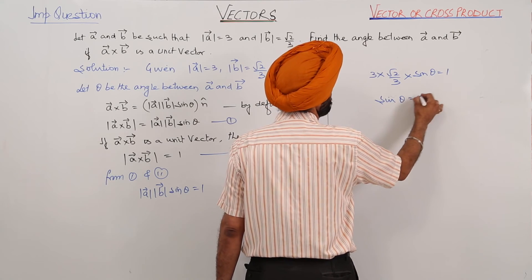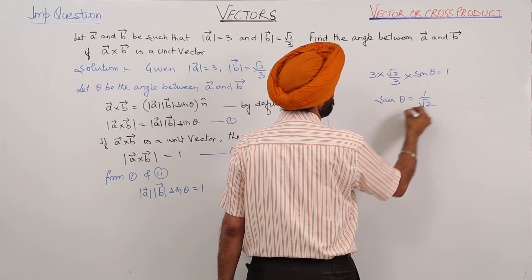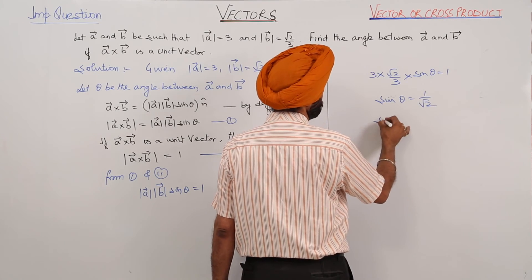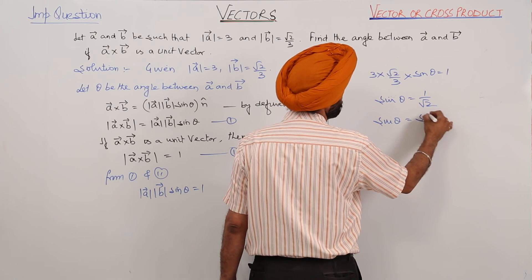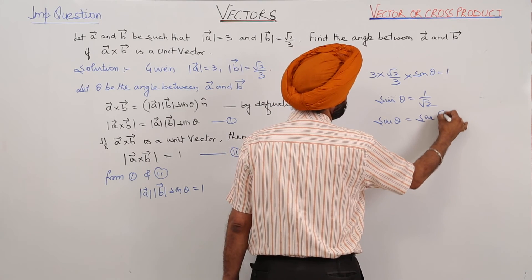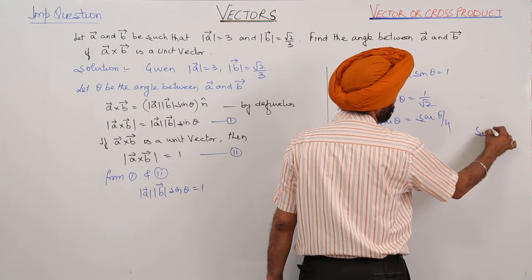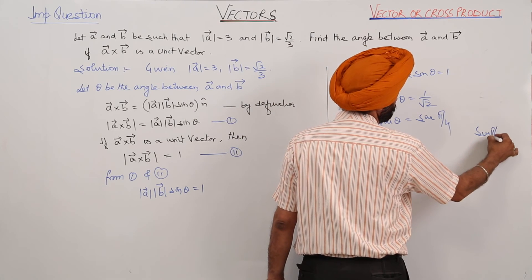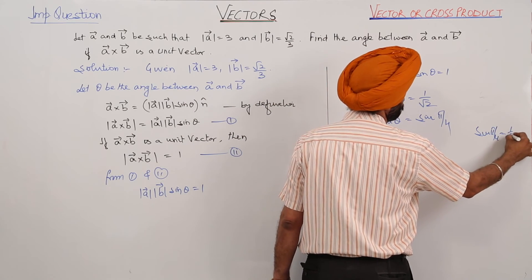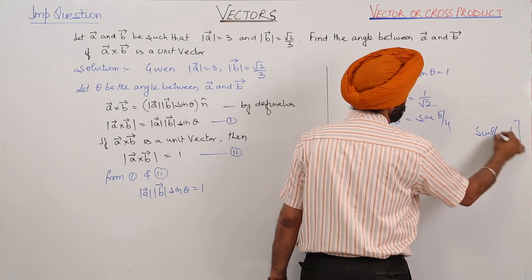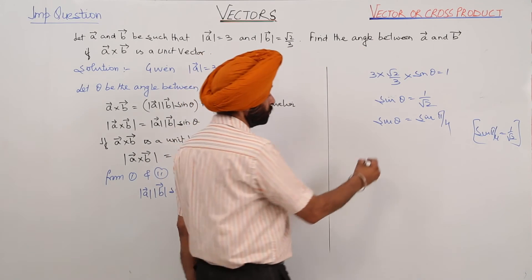Now, solving for sin theta: sin theta is equal to 1 upon square root of 2. Therefore, sin theta is equal to sin of pi by 4, since sin(π/4) is equal to 1 upon square root of 2.